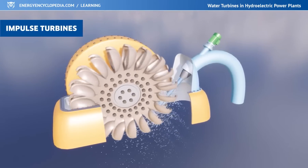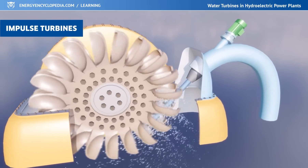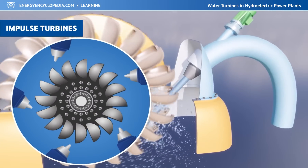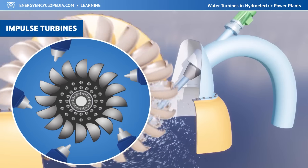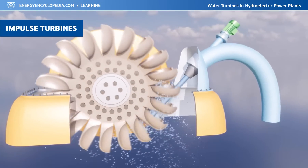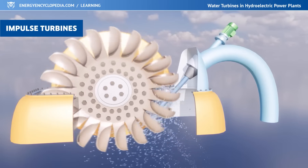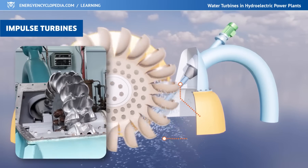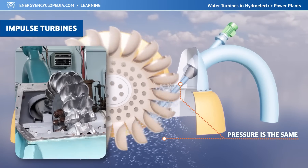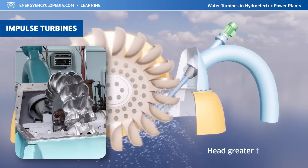In impulse turbines, the water's pressure energy is changed to kinetic energy using nozzles. The accelerated stream of water is then aimed at the blades of the runner, transferring its energy and causing it to spin. The turbine need not be enclosed because the pressure of the water as it passes through the runner does not change. Impulse turbines are used for a head greater than 300 meters.